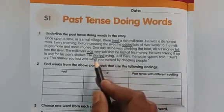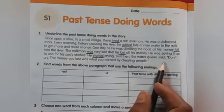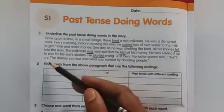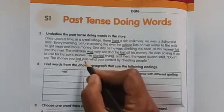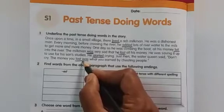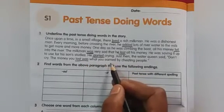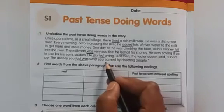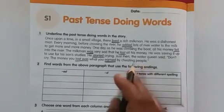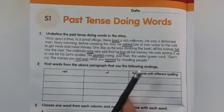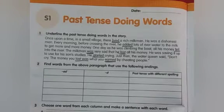'Just then the water queen said: Don't cry. The money you lost was also past tense. Lost was what you earned — this is also past tense — earned by cheating people.' In this story we have to underline all the past tense words. We have underlined them.